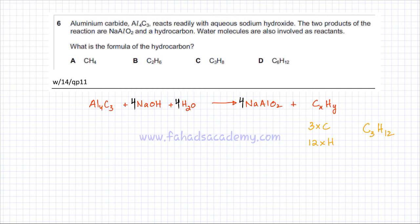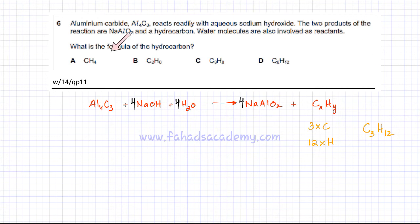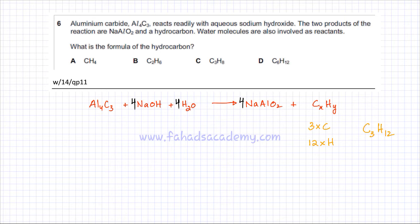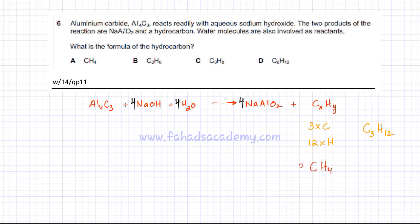One obvious choice for the hydrocarbon is C3H12, which would completely balance the reaction. But there's something fishy about this molecule, because generally a hydrocarbon doesn't contain that many hydrogens. Let's check if C3H12 is one of the given options — it turns out this option is not given.